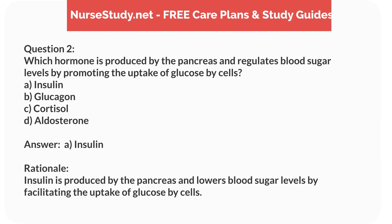Answer: A. Insulin. Rationale: Insulin is produced by the pancreas and lowers blood sugar levels by facilitating the uptake of glucose by cells.